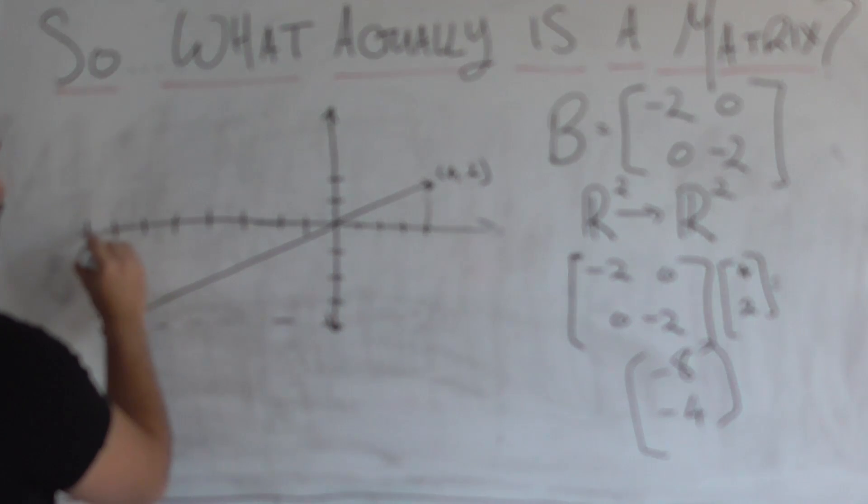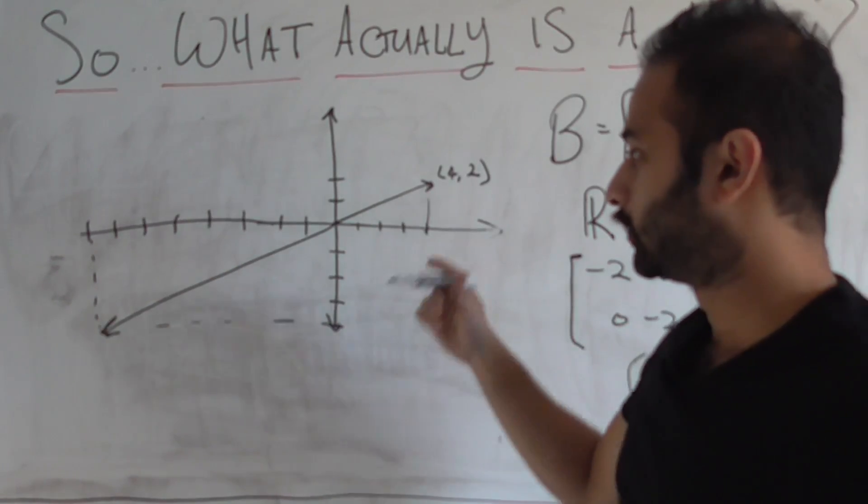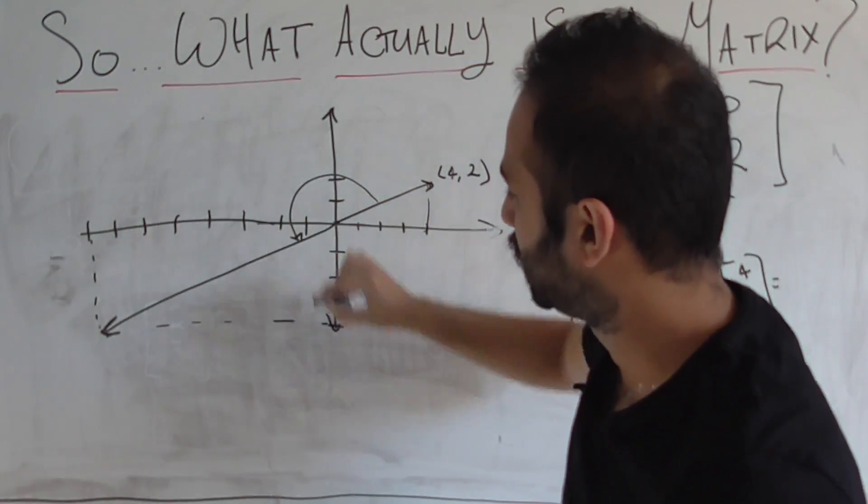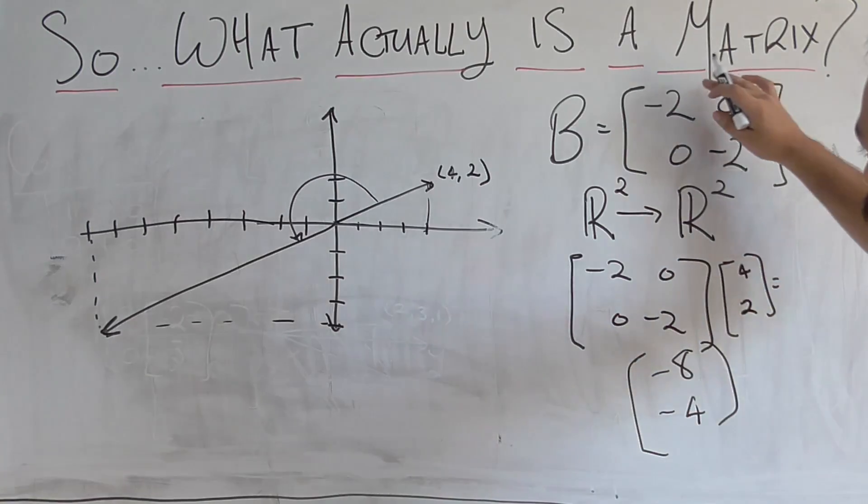This one is minus eight, minus four. So it's double the length. And it's pointing in the complete opposite direction. So if you took this and you rotated it 180 degrees, that's the direction it points in.